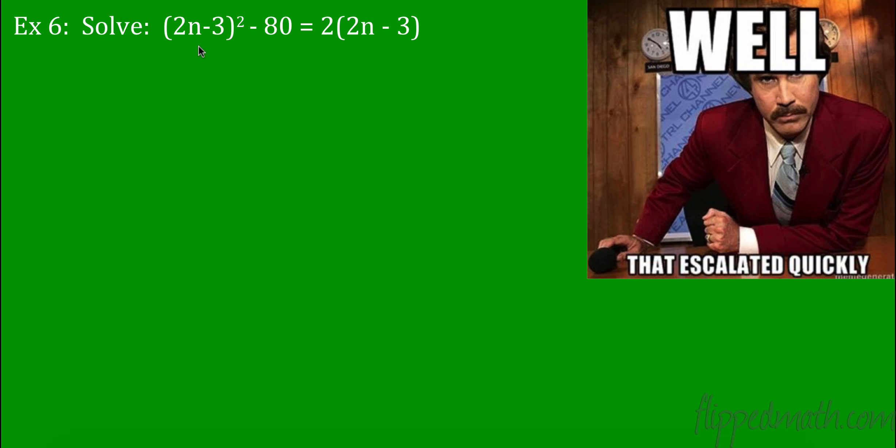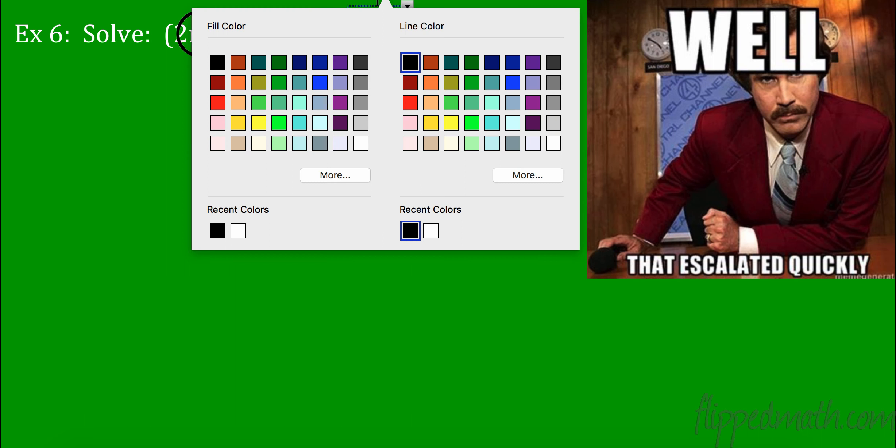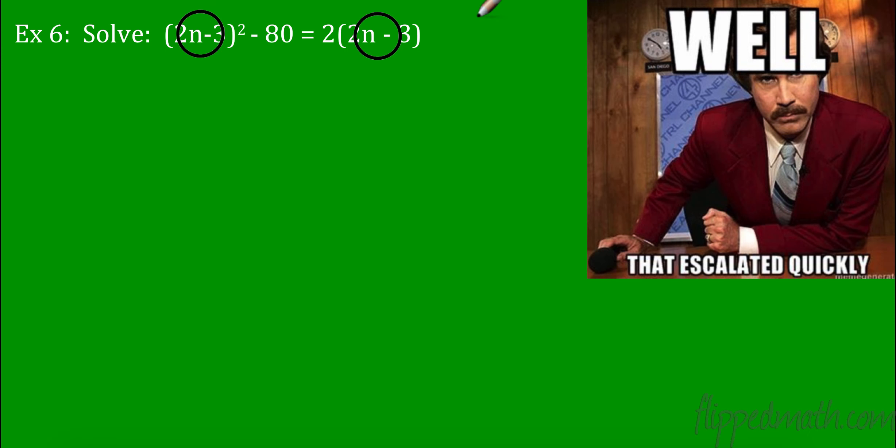So right now, we have 2n minus 3 squared minus 80 equals 2 times 2n minus 3. This looks really tough. And in fact, it is kind of tricky. But one thing I want you to notice here is that we have a couple of things that are exactly the same. 2n minus 3 right here. This right here, it's here. And it is over here. So it's kind of like I call it a blob. I call it a blob. So what I want us to think about right now is I'm going to call that blob x. And wherever I see that blob, it is equal to x now. And what is x? 2n minus 3. So let's change this equation. So this blob is now x squared minus 80 equals 2 times this blob again, which is x.